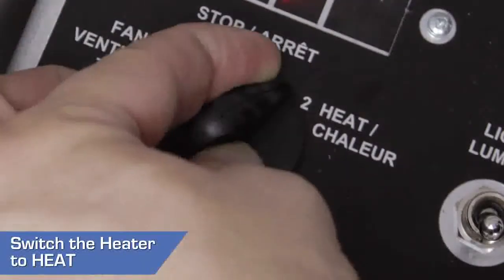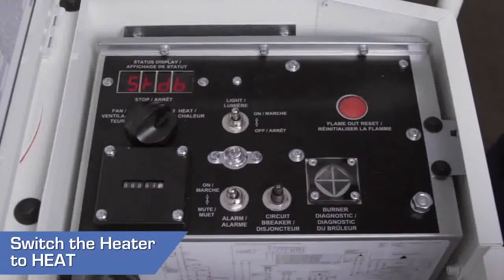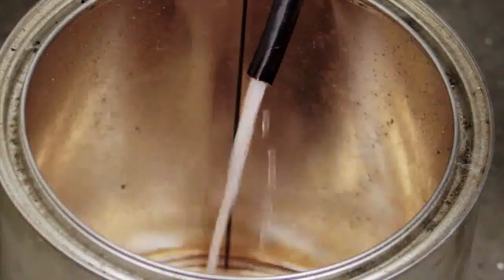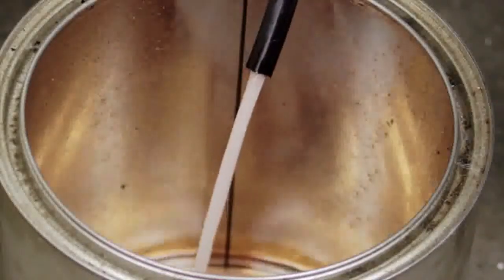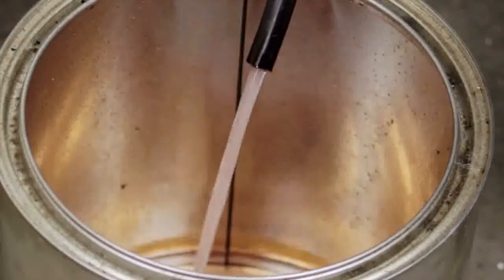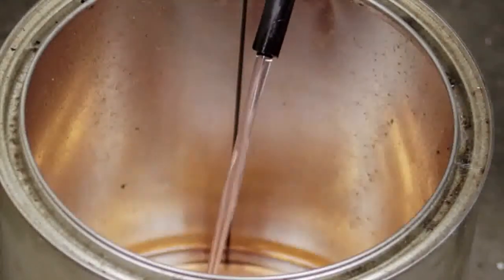Now turn the master control switch to heat. You will hear the blower start to turn, and the fuel will start to pour out through the bleeder hose. Once the fuel appears to run free of bubbles, close the valve.